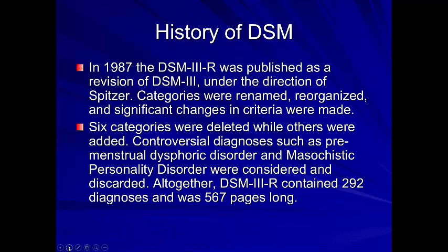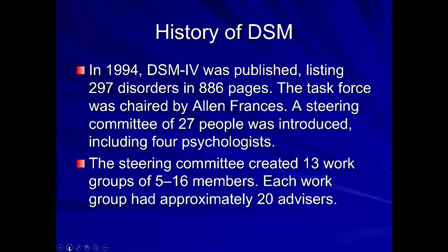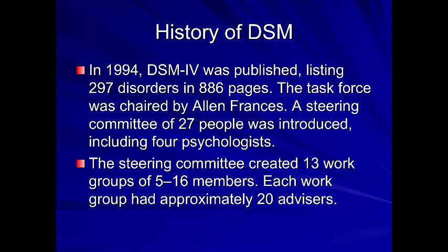In 1987, they published the DSM-III-R, a revision also under Spitzer. Certain categories were renamed, reorganized, and there were significant changes in criteria. Six categories were deleted while others were added. Controversial diagnoses such as premenstrual dysphoric disorder and masochistic personality disorder were considered and discarded — ironically, the DSM-5 has since added premenstrual dysphoric disorder. The DSM-III-R now contained 292 diagnoses and 567 pages, showing this book was rapidly gaining in size.